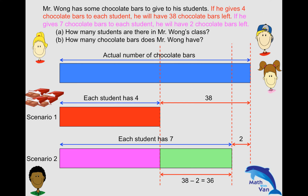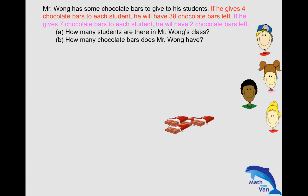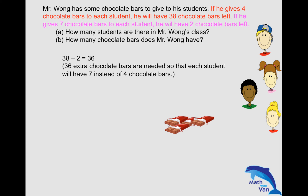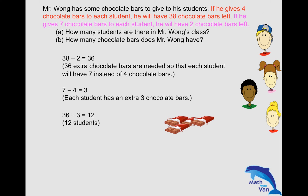So 36 extra chocolate bars are needed. What is the increment for each student? Seven minus four, which is three. So each student would now have an additional three chocolate bars. So how many students are there in Mr. Wong's class? I need 36 more chocolate bars and each student has three more, so 36 divided by three gives you 12. So there are 12 students.